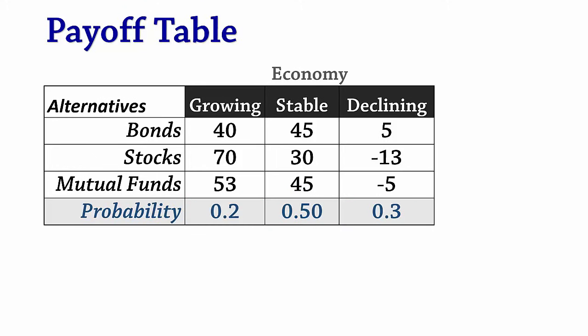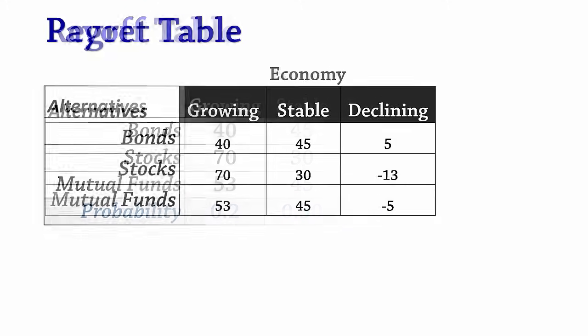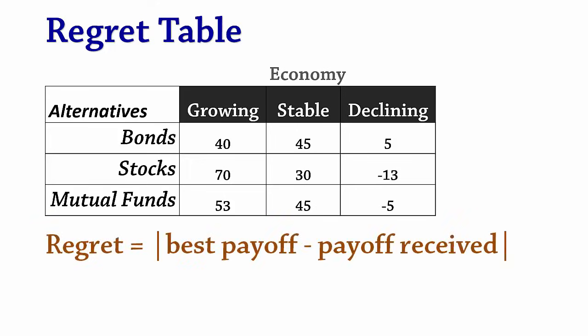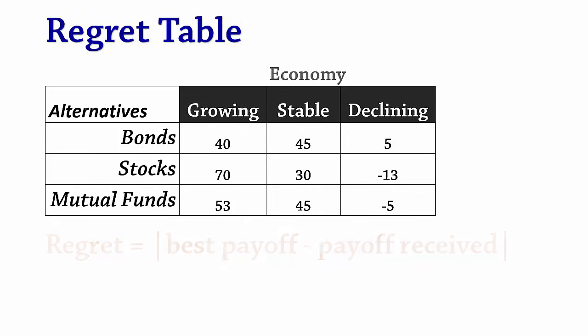To begin, we obtain a regret or an opportunity loss table. Regret is the difference between the best payoff in a particular state of nature and the actual payoff received. If the economy is growing, the best payoff is 70, so if we invested in bonds, the regret is 70 minus 40, which is 30. For stocks, it is 0. For mutual funds, it is 17.